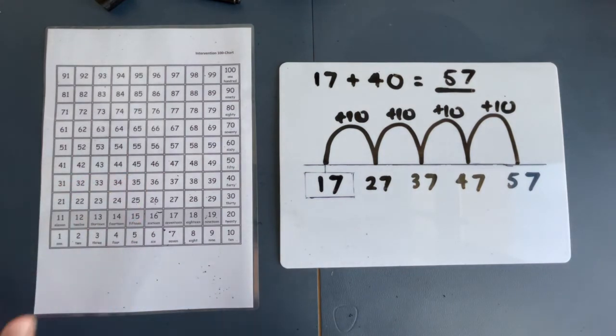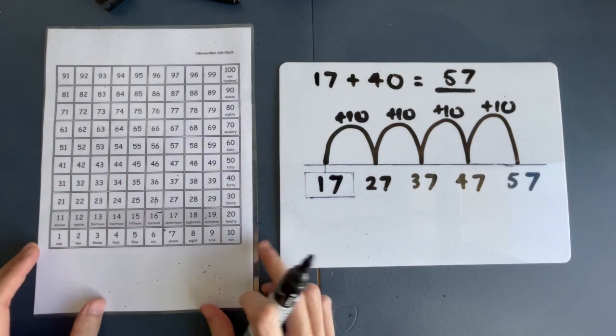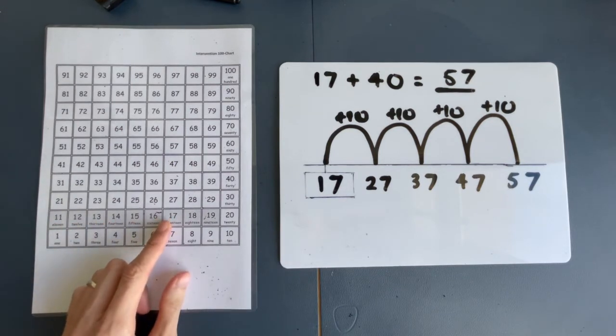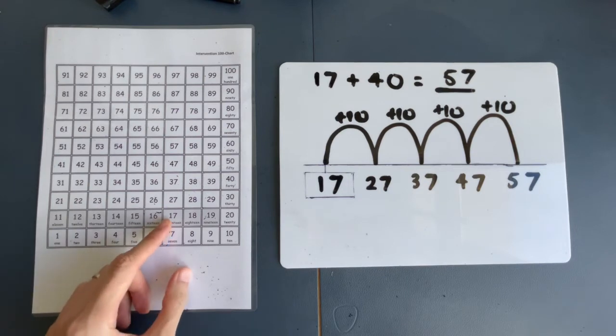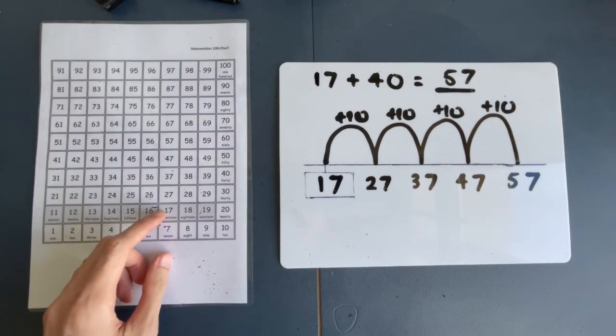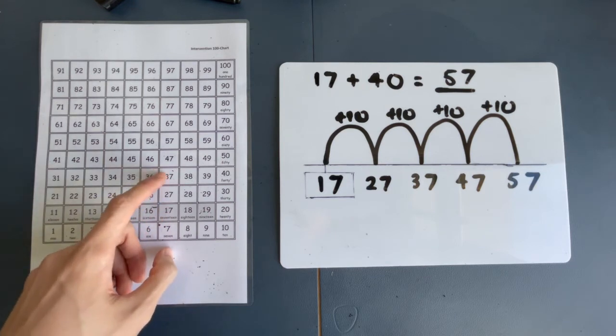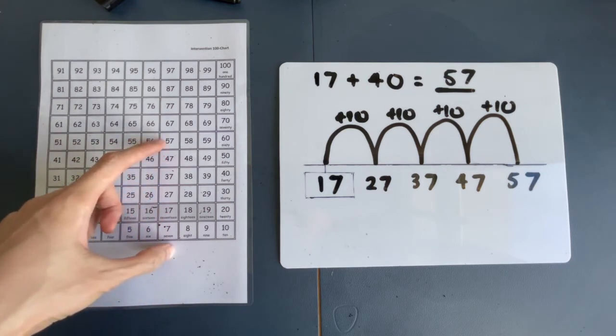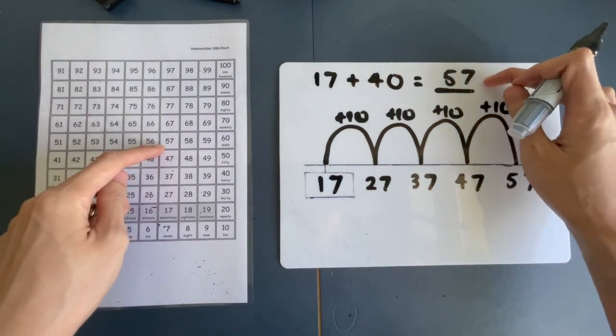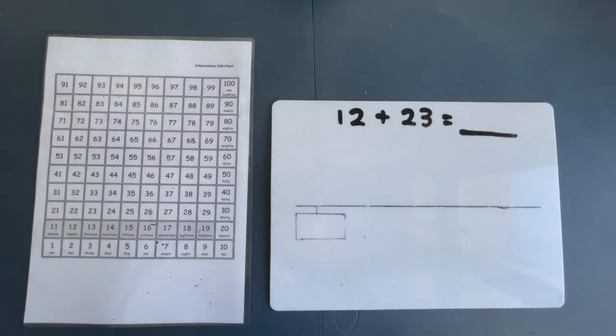So, using the number chart technique, let's find where 17 is. You are here. So, 17. We are going to jump 4 times upwards because it's 10 more. So, 10. 1, 2, 3, 4. And we get the same answer. 57.